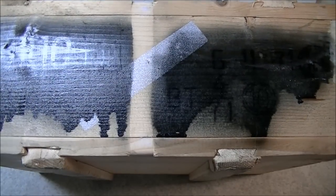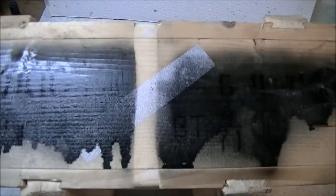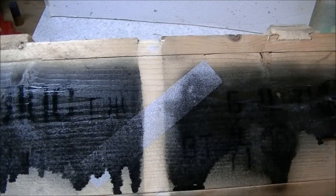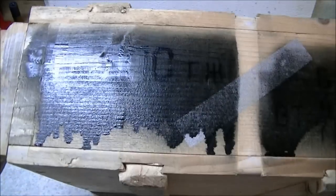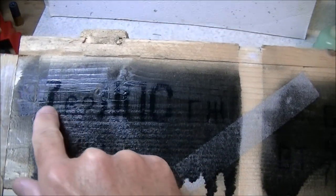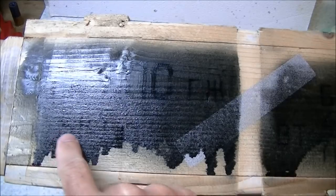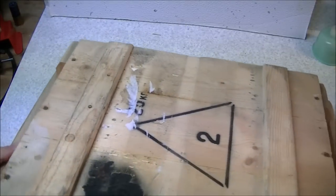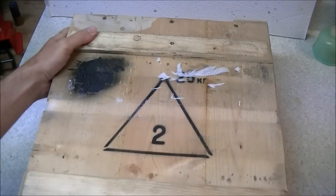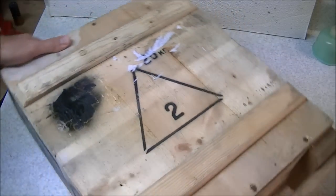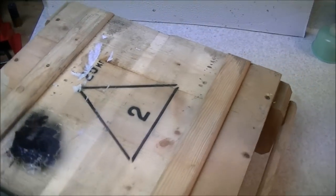For some reason they've spray painted over the markings on it, but we can kind of read it through the spray paint. There's a little bit of nomenclature there - 880 count, 7.62 millimeters. The big triangle on the top here with the two on it.